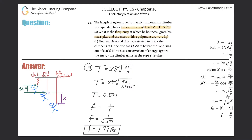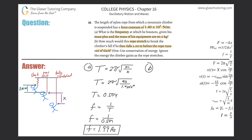Now let's look at part B: how much would this rope stretch to break the climber's fall if he free falls two meters before the rope runs out of slack? There's a little bit to letter B. Looking at the drawing, there are three cases: first, there is some slack in the string.